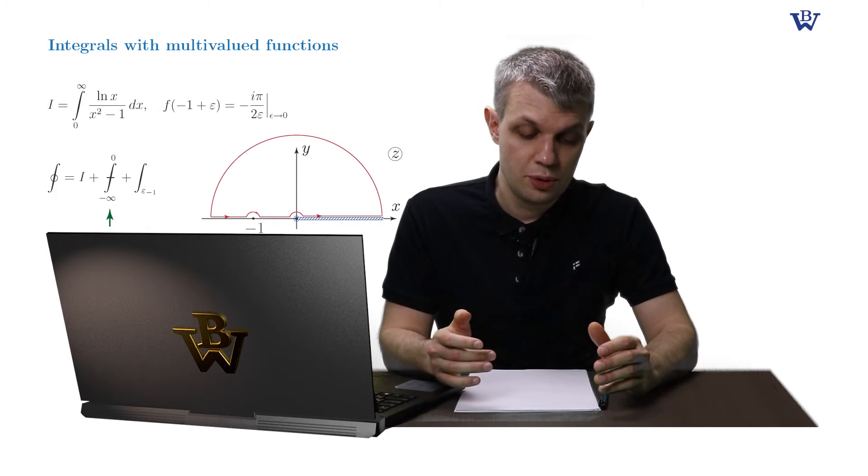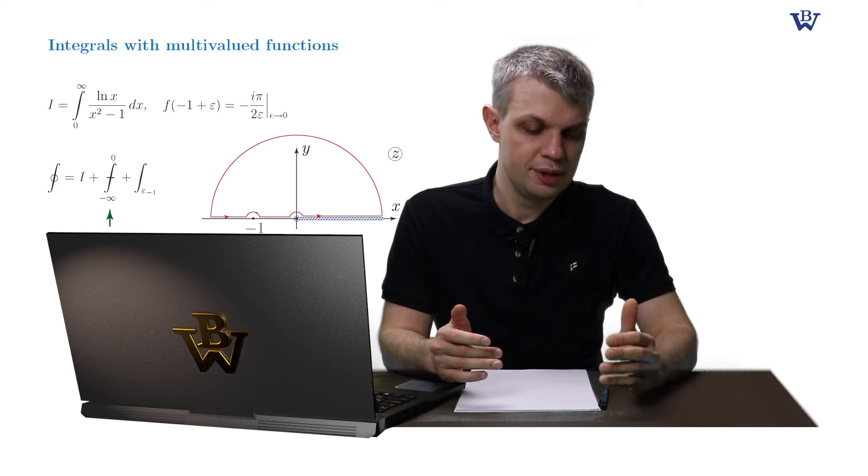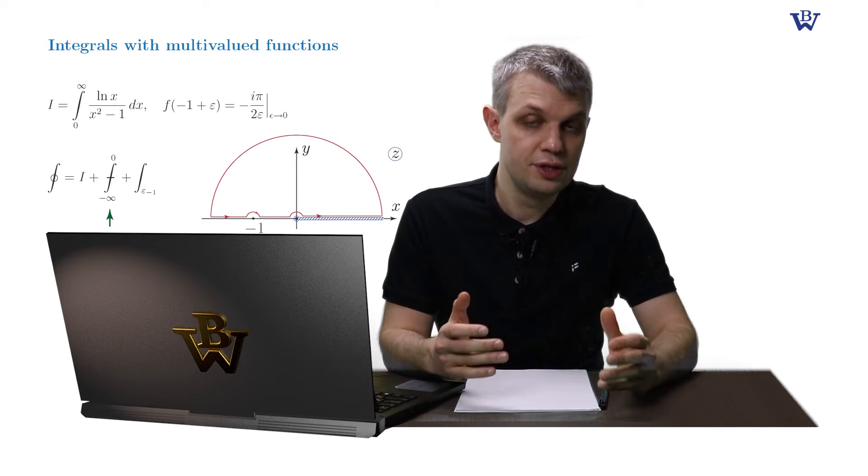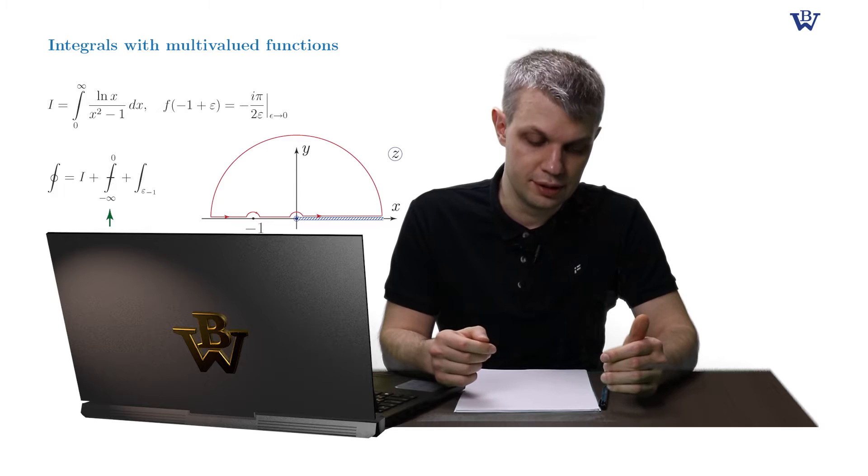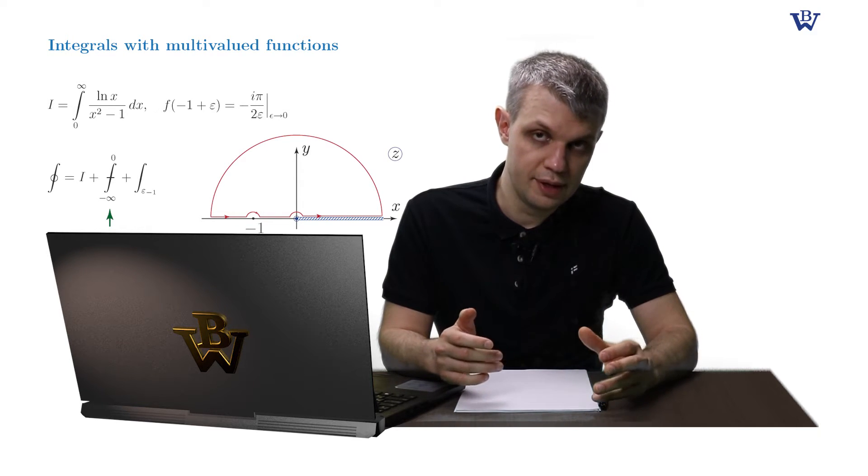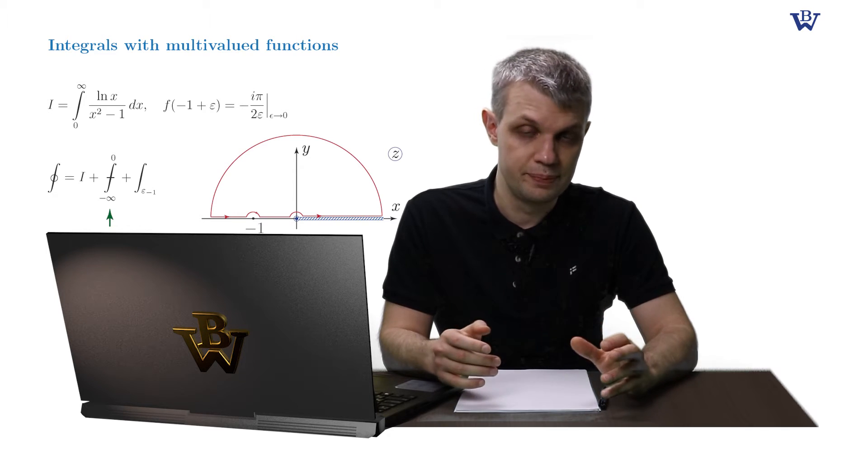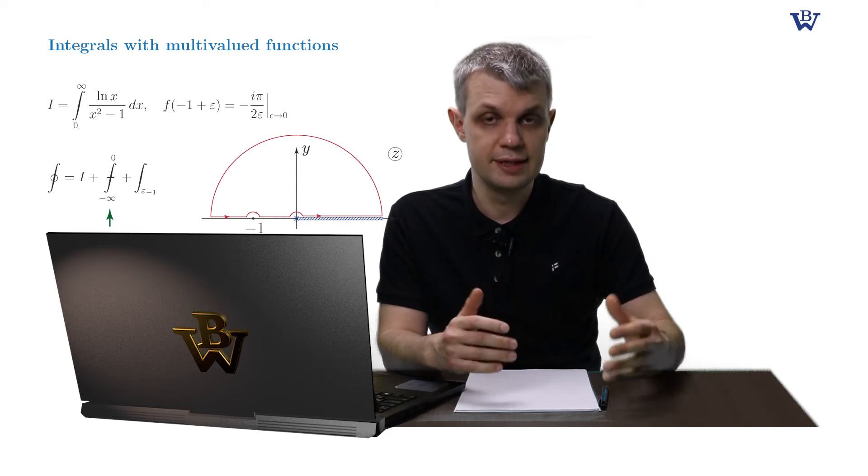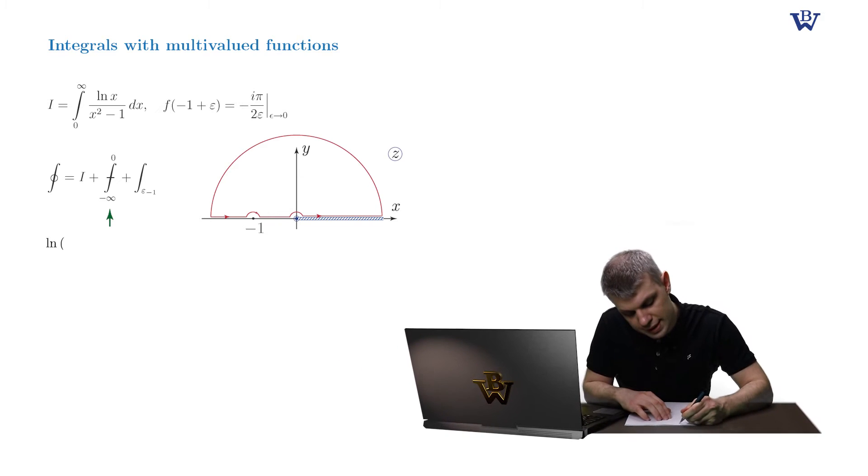To compute it, we need to introduce an appropriate parameterization consistent with the choice of the regular branch of our log function. As you probably remember from our previous example, the imaginary part of the log function of the negative semi-axis is π. So log of minus x equals log of x plus iπ.